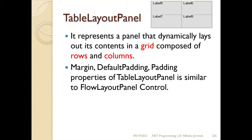You can see in the diagram on the table where each control will be placed. For example, label five is at first row first column, label six is at first row second column, label seven is at second row first column, label eight is at second row second column. In short, the layout panel container controls just determine the layout of the controls which we want to keep in them.